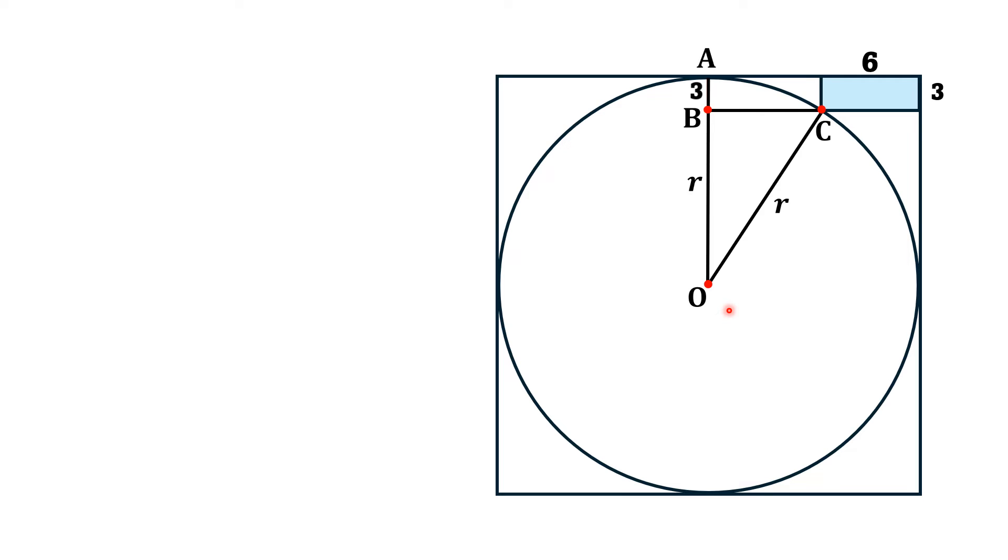Then this length OB will be r minus 3. This length is r. If we draw another radial line, then it means this length is 6 units. So this length BC is r minus 6.